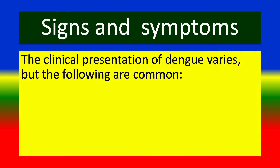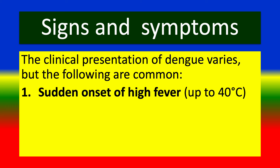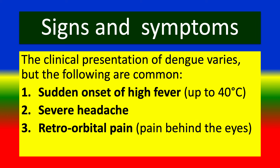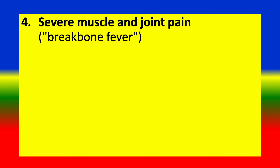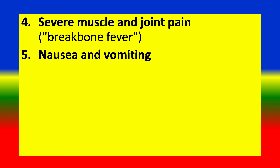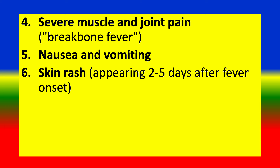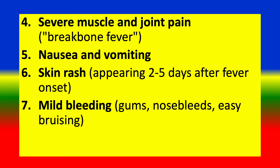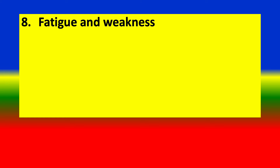Signs and Symptoms. The clinical presentation of dengue varies, but common signs include: sudden onset of high fever, severe headache, retro-orbital pain, severe muscle and joint pain, nausea and vomiting, skin rash, mild bleeding, and fatigue and weakness.